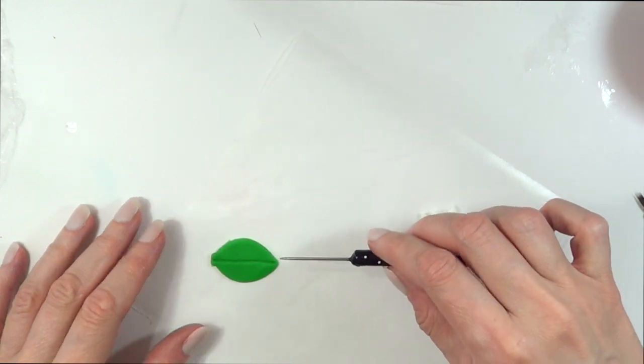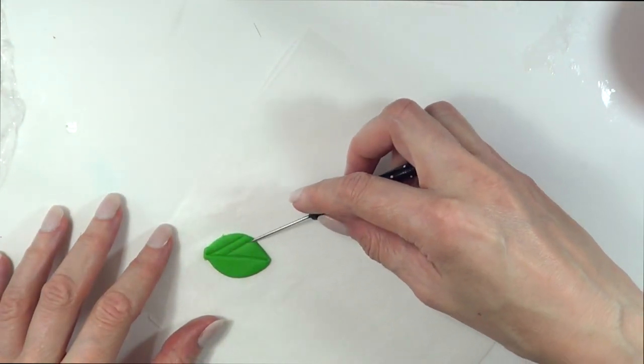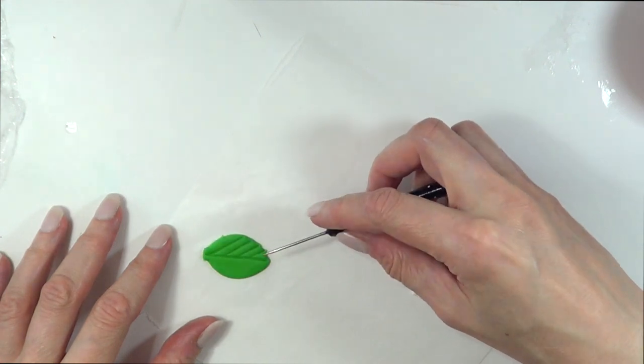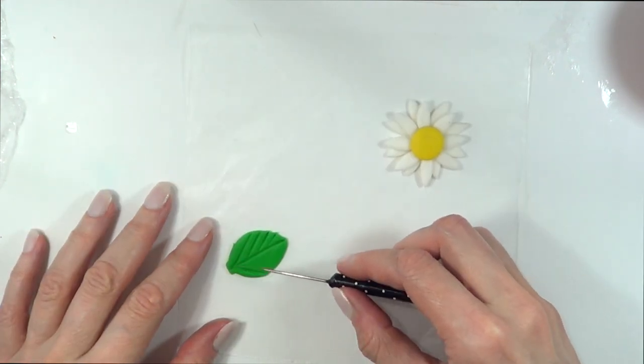I use it for pretty much, well not this one, this one is for fondant. But similar to this, you can use for everything and anything. It's just super handy. And I'm just going to add some details on the leaf.